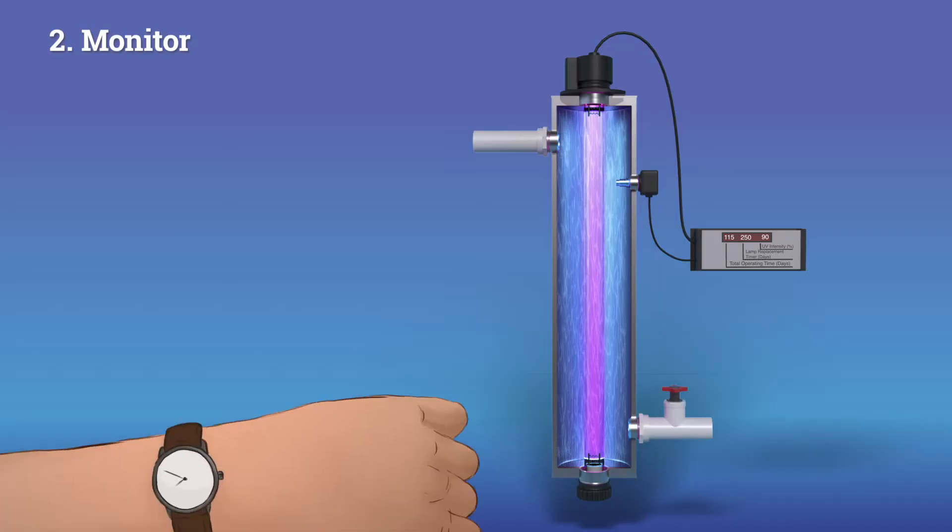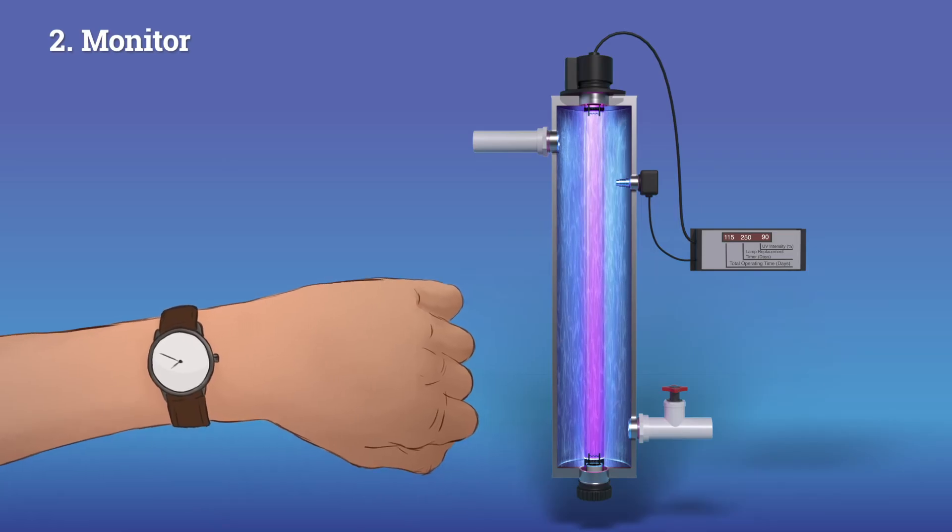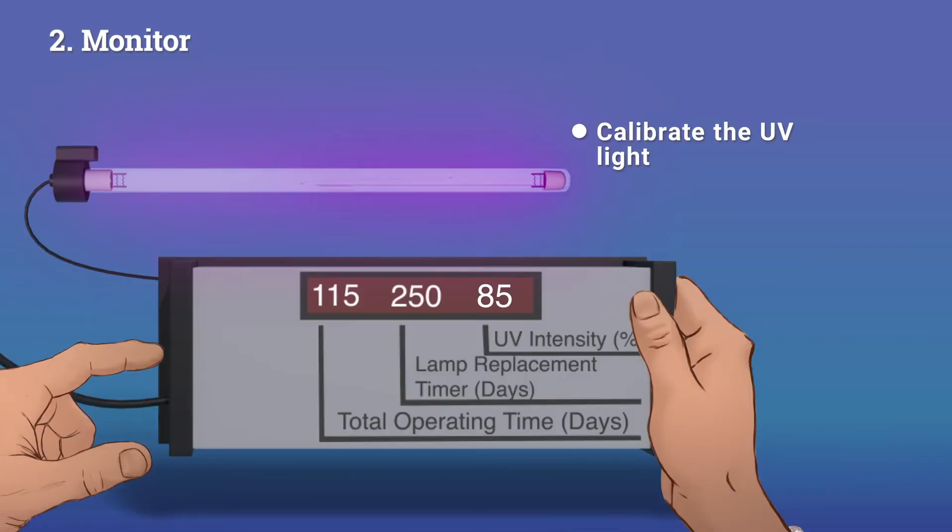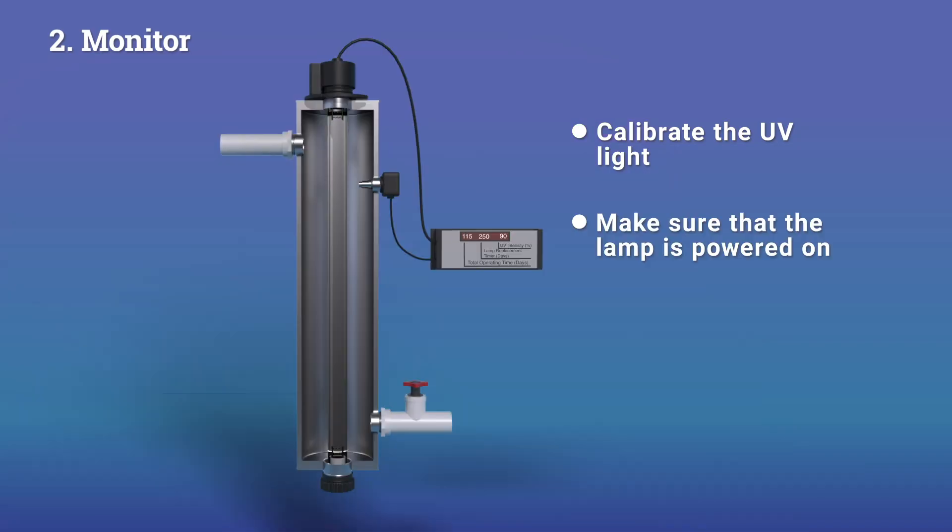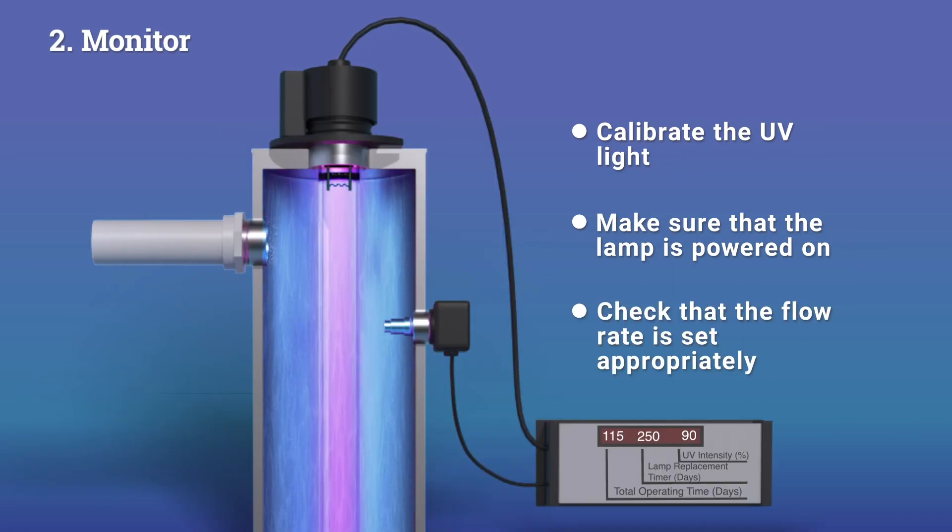Every time the system is operated, you will need to monitor it. You will want to make sure that the UV sensor is detecting adequate UV intensity through the water. This criteria will be established by the system manufacturer and is one reason why a sensor is important. Check to make sure the lamp is powered on and that the flow rate is set appropriately.